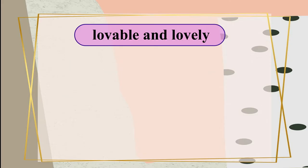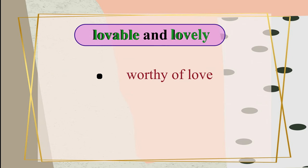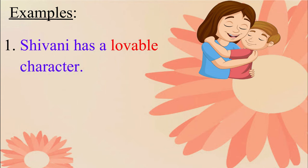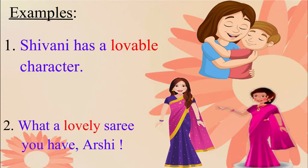The next set of words is 'lovable' and 'lovely.' Lovable means worthy of love. The word lovely means beautiful. Please repeat these sentences to understand better: Siwani has a lovable character. What a lovely sari you have, Arshi.